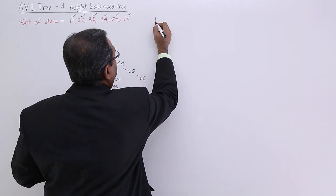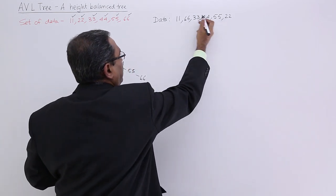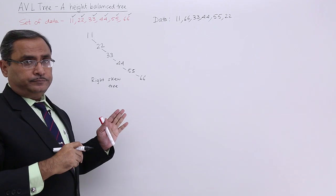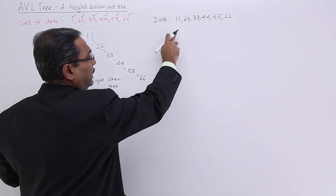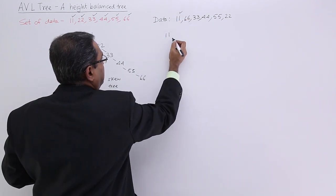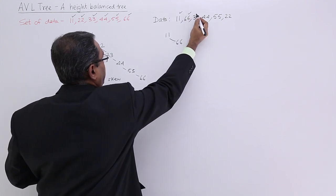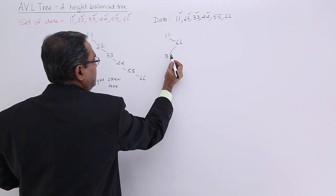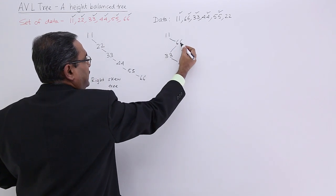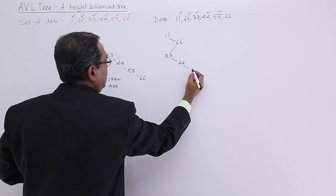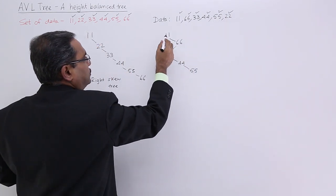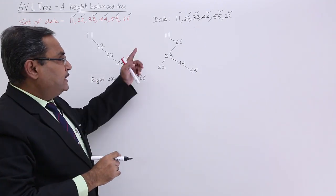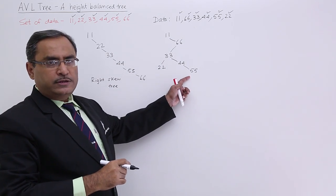Let us suppose the data has been given in this way: 11, 66, 33, 44, 55, 22 — here the data items are not sorted; they are randomly given. Now I am forming a binary search tree from that. 11 will be the root node, 66 is greater than 11 so it should be the right child. 33 is greater than 11 but lesser than 66. 44 is greater than 11, lesser than 66, greater than 33. In this case, the tree is also getting too long.